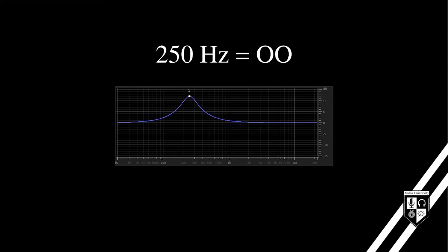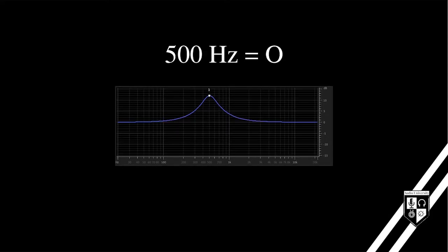Let's start with 250 Hz. 250 Hz can be identified by an OO sound, as in food. 500 Hz can be identified by an O sound, as in no.